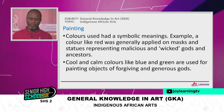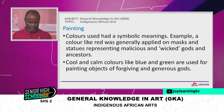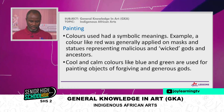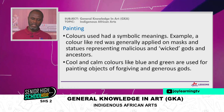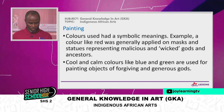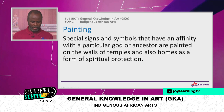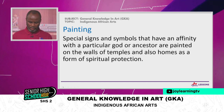Colors used had symbolic meaning. For example, if we apply the color red to a mask or statue, it represents a malicious and wicked god or ancestor. But when a cool or calm color like blue or green is used, the object being painted represents a forgiving and generous god. Special signs and symbols with an affinity to special gods or ancestors are painted on the walls of temples and in homes as a form of spiritual protection.